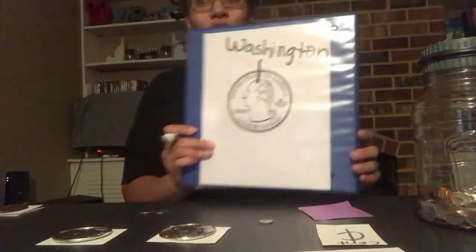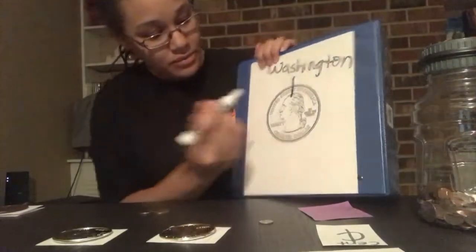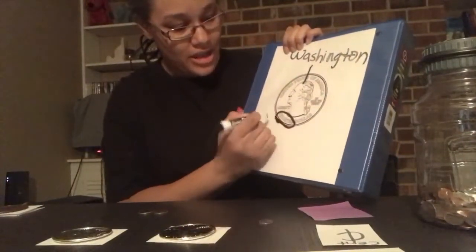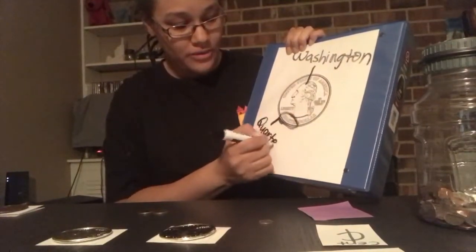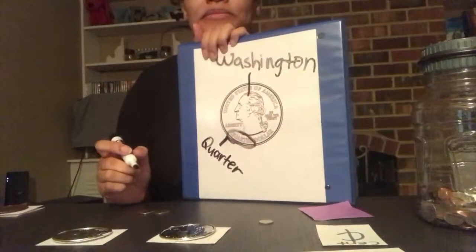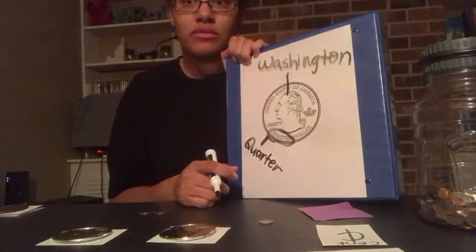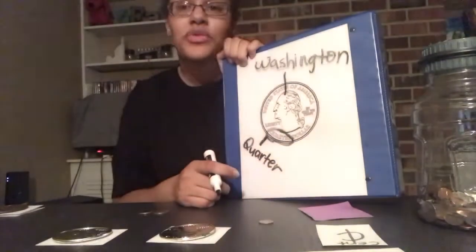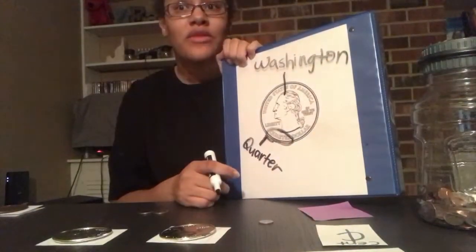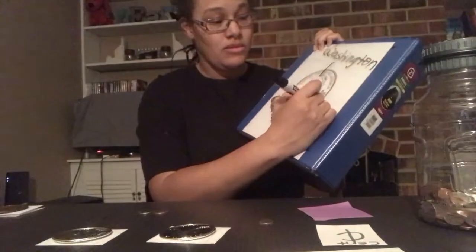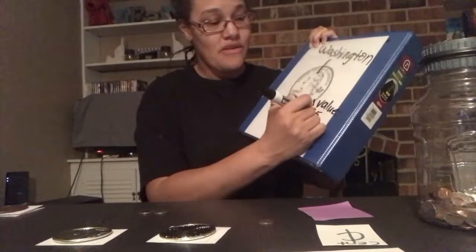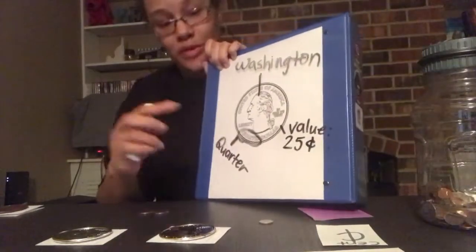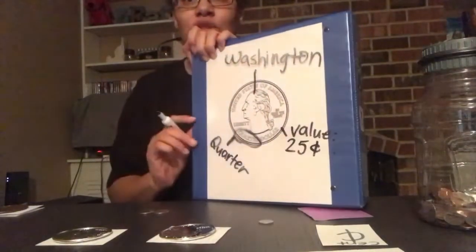Do you notice the word 'quarter' on the head side? The word 'quarter' is on the head side, so if you forget, it tells you it's a quarter. What's the value of a quarter? We talked about the value of a dime — it's worth 10 cents. What's the value of a quarter? It's worth 25 cents. Remember, we put the cent sign there because we're talking about coins.